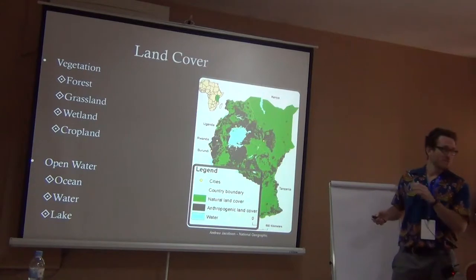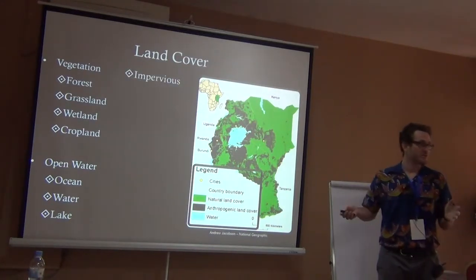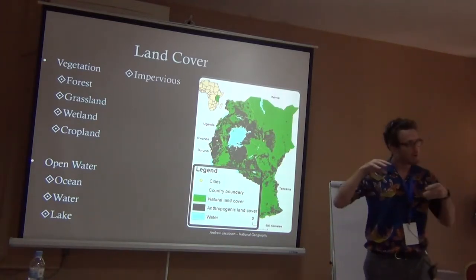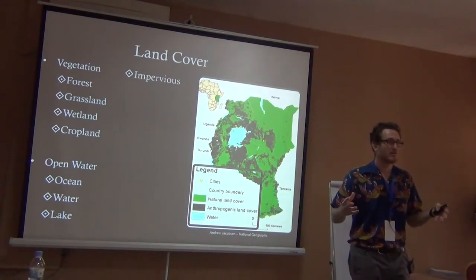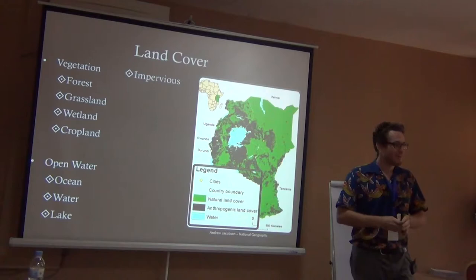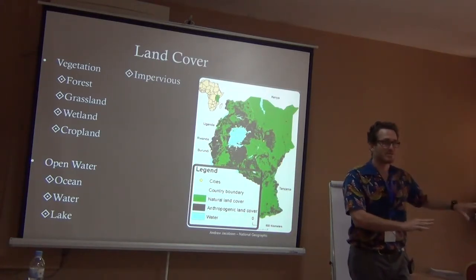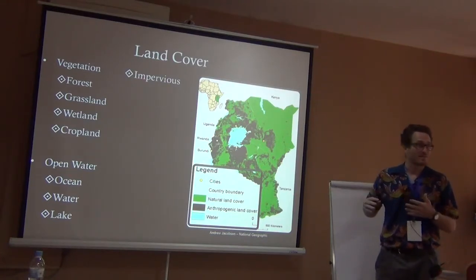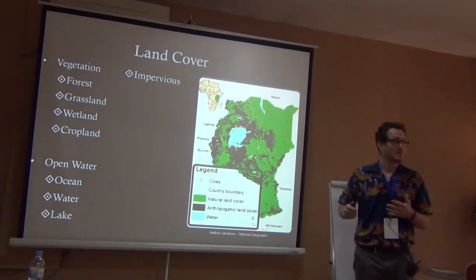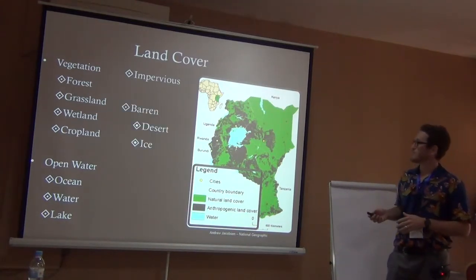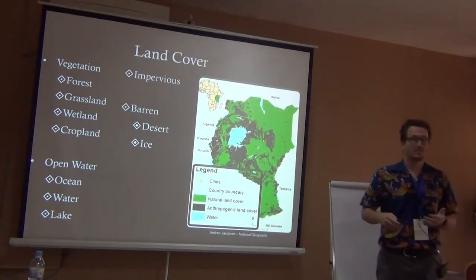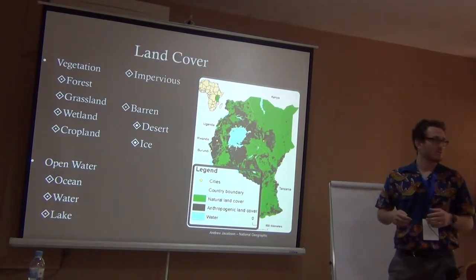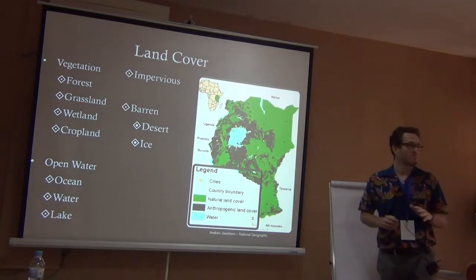We have the different vegetation types, the different water types. We can have what we call impervious surface — a surface that water cannot get through. It's impervious to water, meaning water doesn't filter through it, and that has a lot of implications for ecology: if water can't go into the soil, it gets pushed or pulled to different places, changing the ecosystem. We can also have barren areas — places where there is no vegetation, usually desert, ice, rock, or sometimes shorelines.